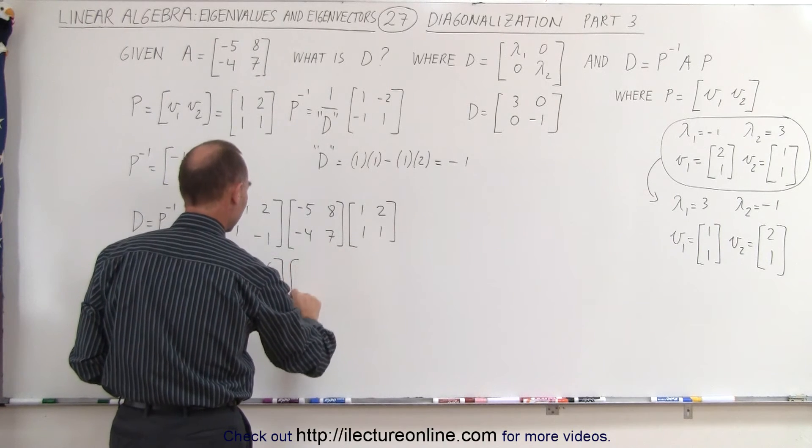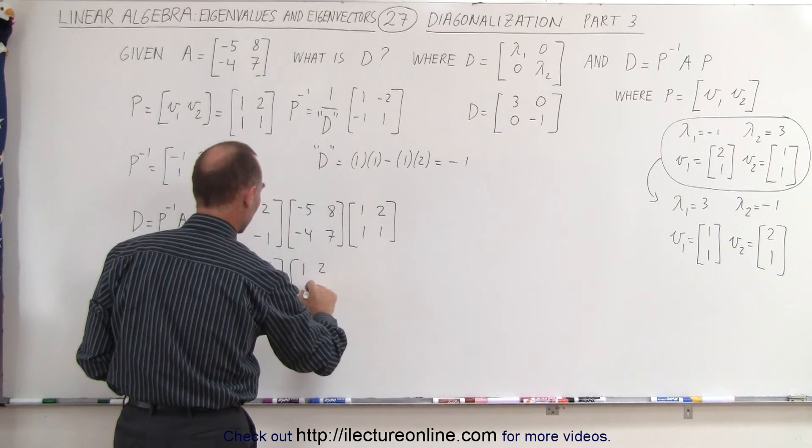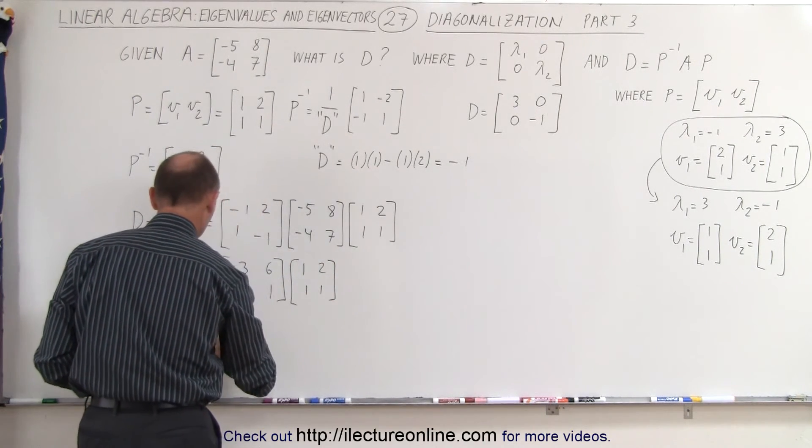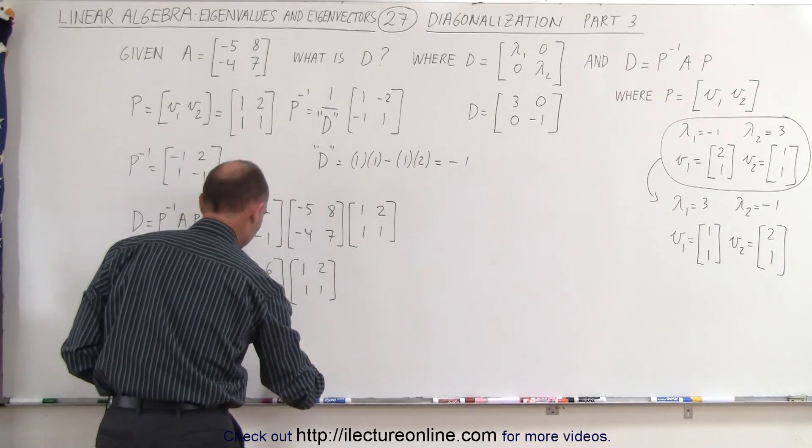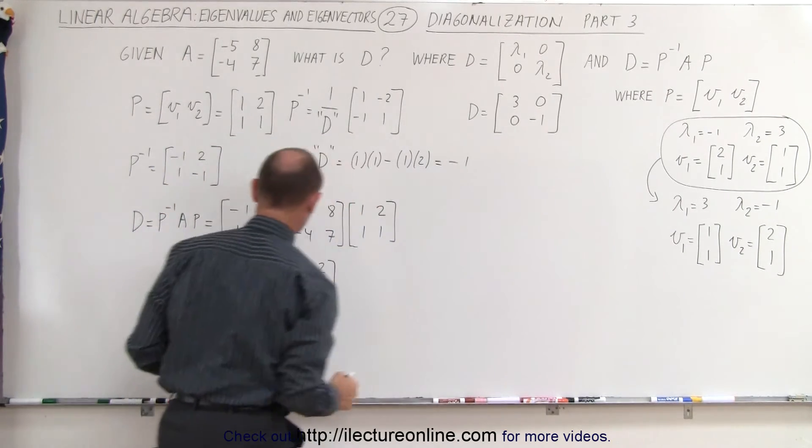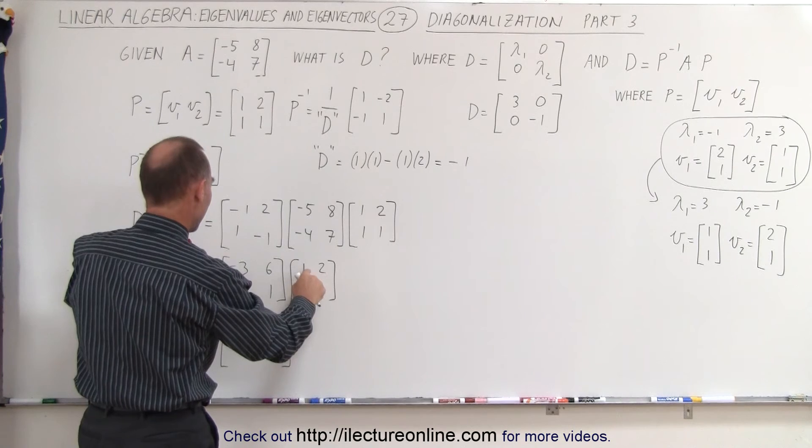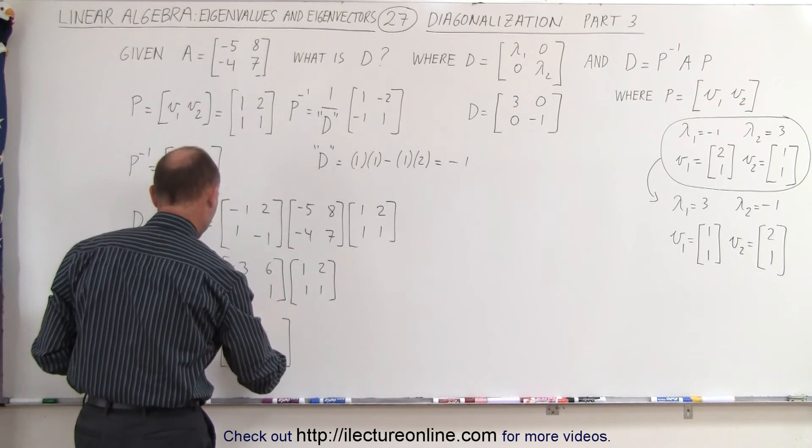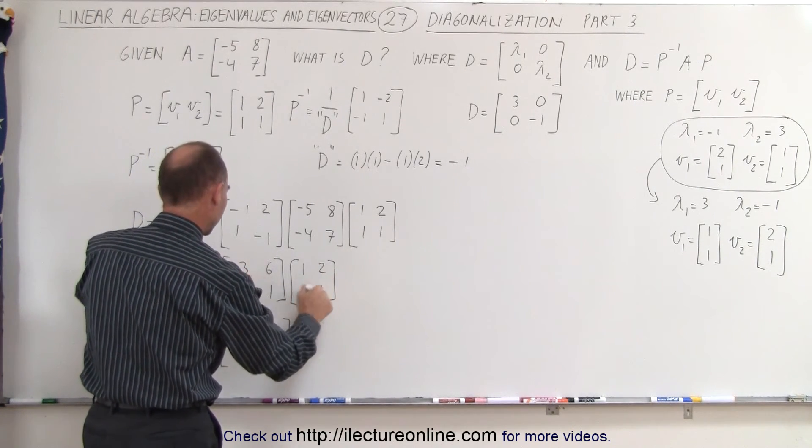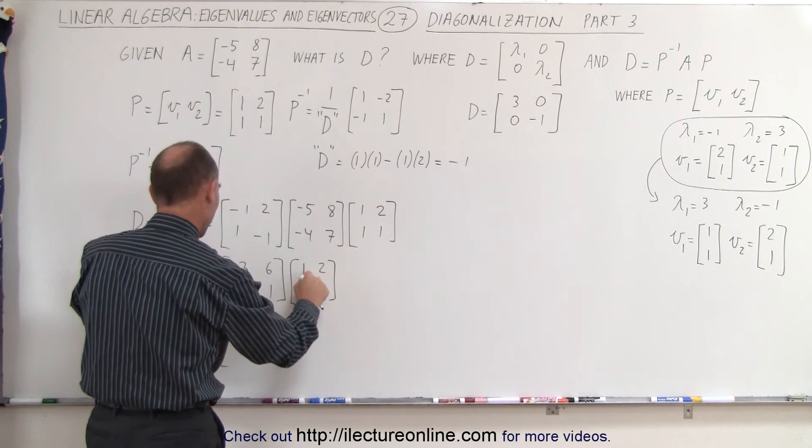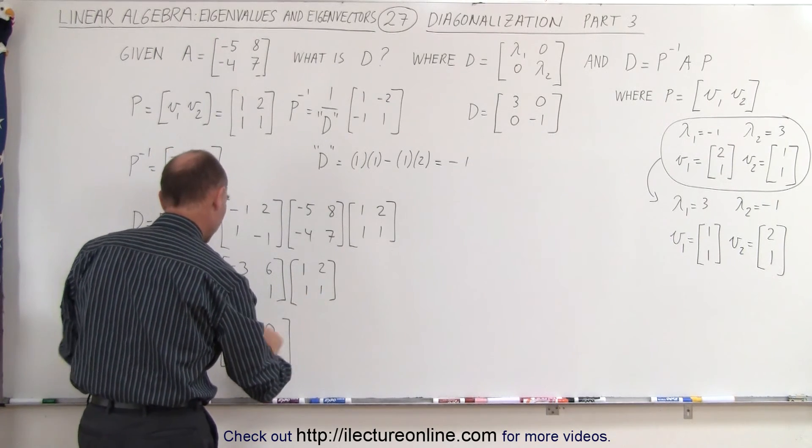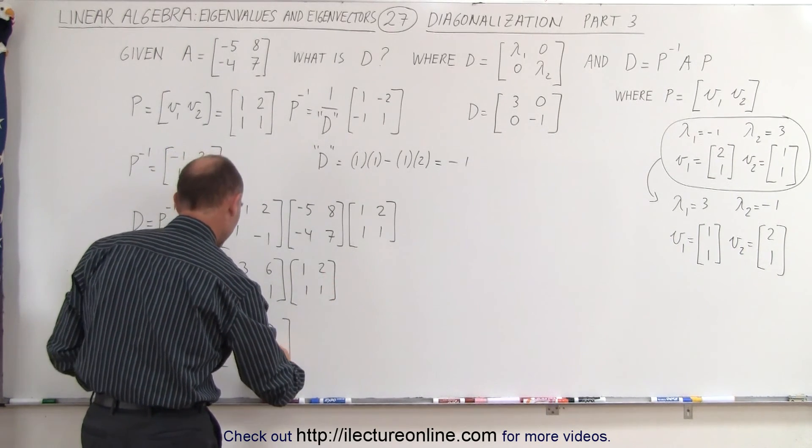And we multiply that times the remaining matrix, 1, 2, 1, 1. And if we multiply this together, we should get this result. Let's see if we do. We get minus 3 plus 6 is a positive 3. A minus 6 plus 6 is 0. A minus 1 plus 1 is 0. And a minus 2 plus 1 is a minus 1.